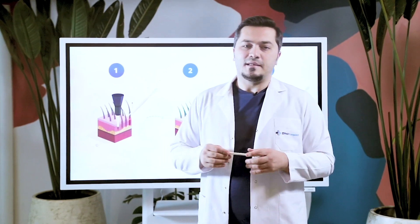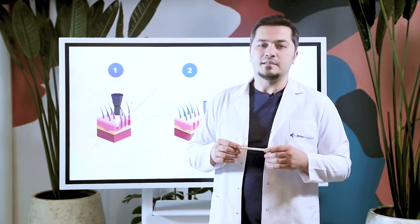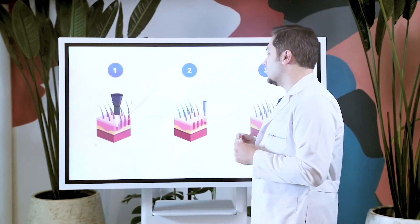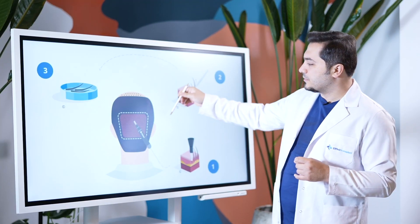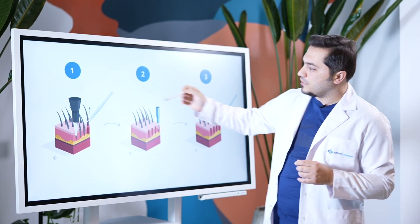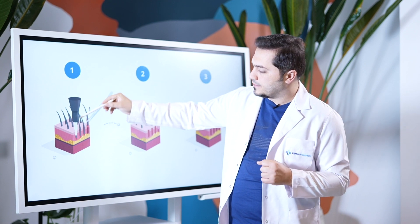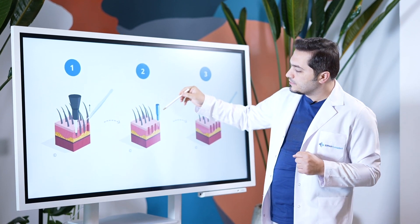The FUE technique is a special method to harvest grafts from the donor area. After the FUE process is completed, microchannels are opened so that we can insert the grafts. As you can see here, we harvest the grafts using the FUE technique.